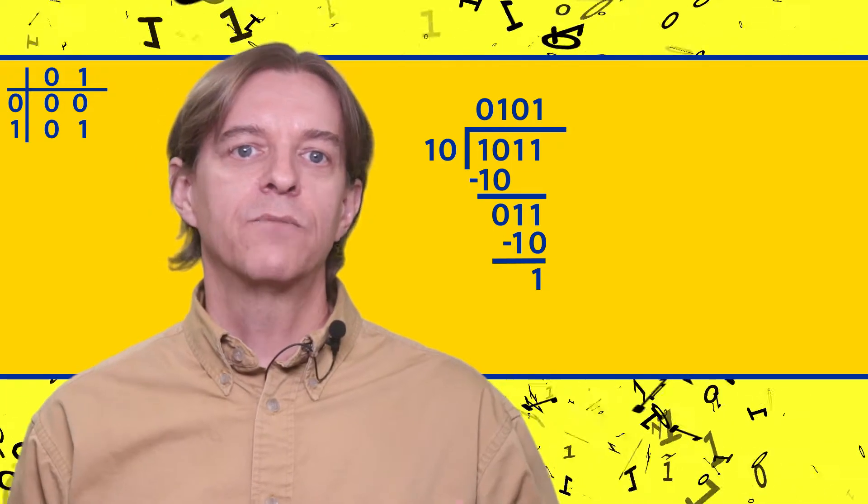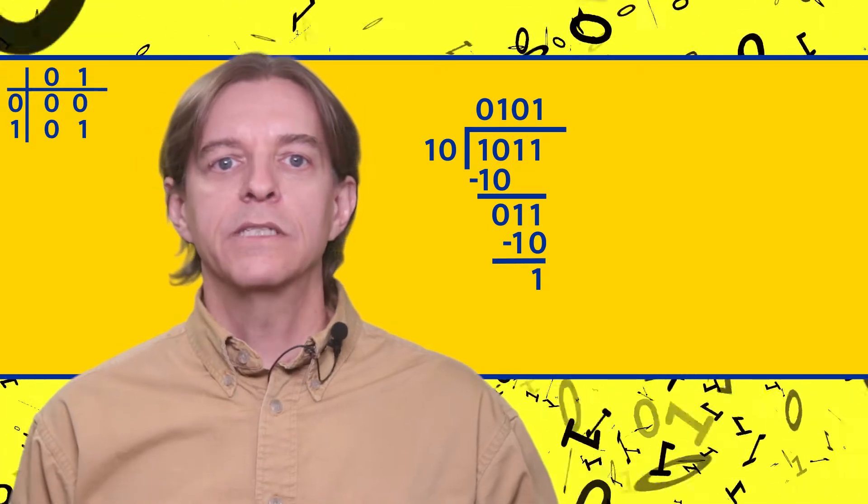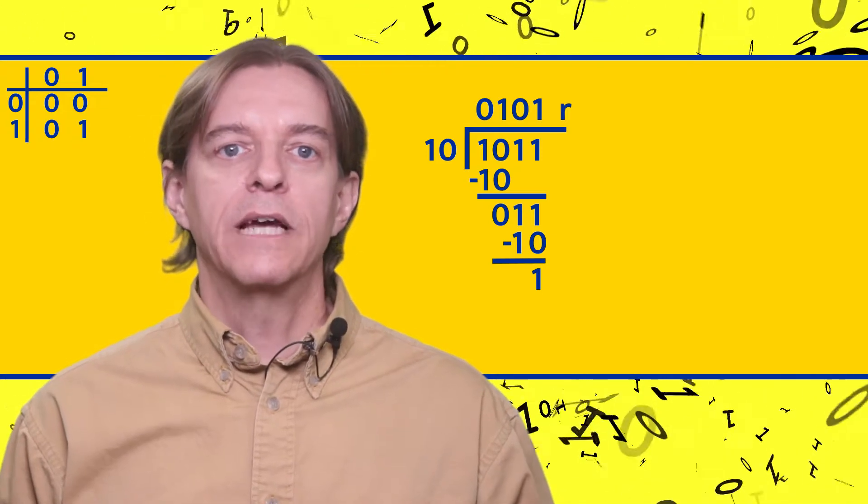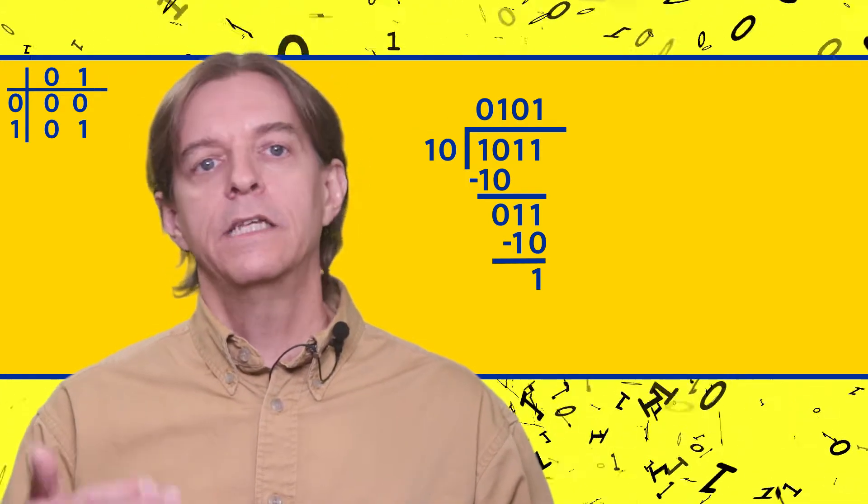There's nothing left of the dividend to bring down, so we have a couple options that are the same as we have with decimal remainders. We can either write down the remainder as part of the quotient, or we can write the remainder as a binary fraction, or we can place a radix point and continue the division.